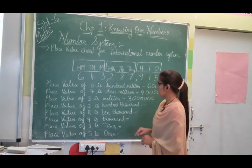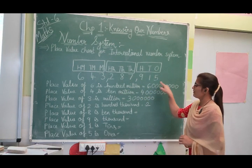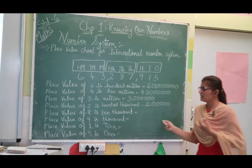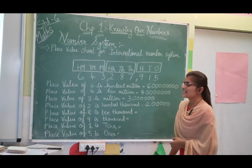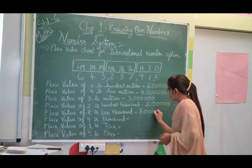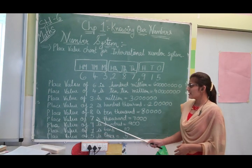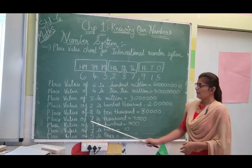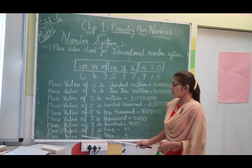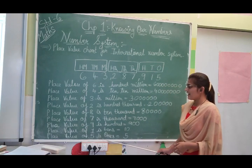The place value of 2 is 100,000. After 2 there are 5 zeros, giving 200,000. The place value of 8 is 10,000 — after 8 there are 4 zeros, giving 80,000. Wait — that will be 8,000. The place value of 7 is 1,000 giving 7,000. Place value of 9 is 100, meaning 900. Place value of 1 is 10, which equals 10. Place value of 5 is 1.